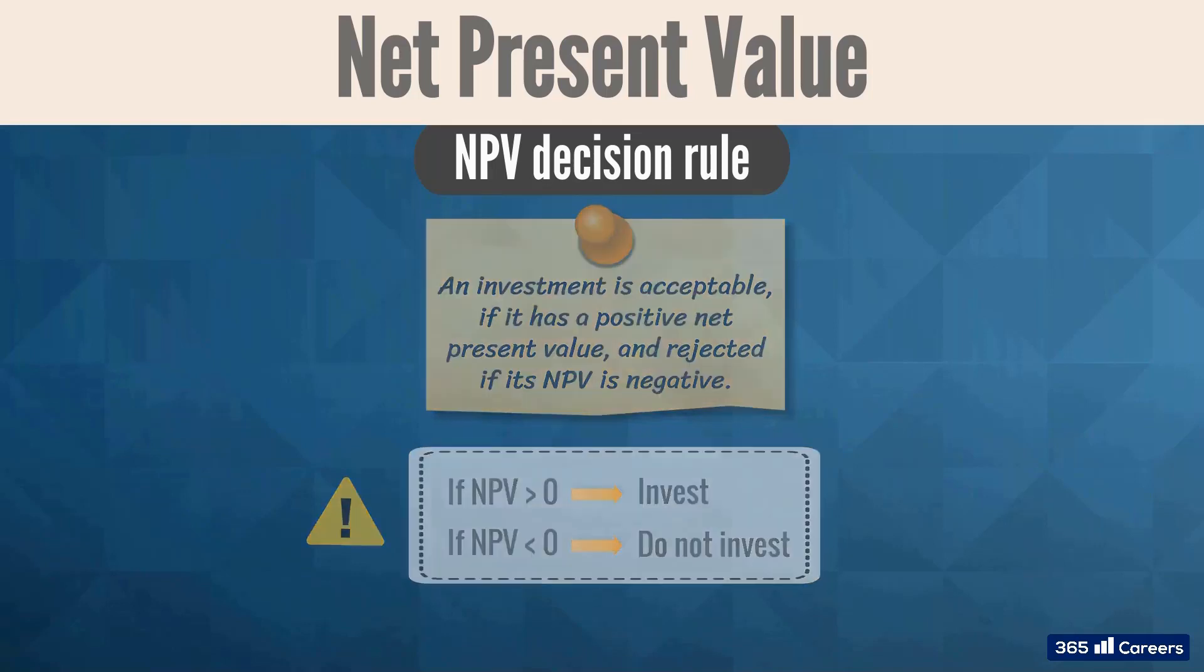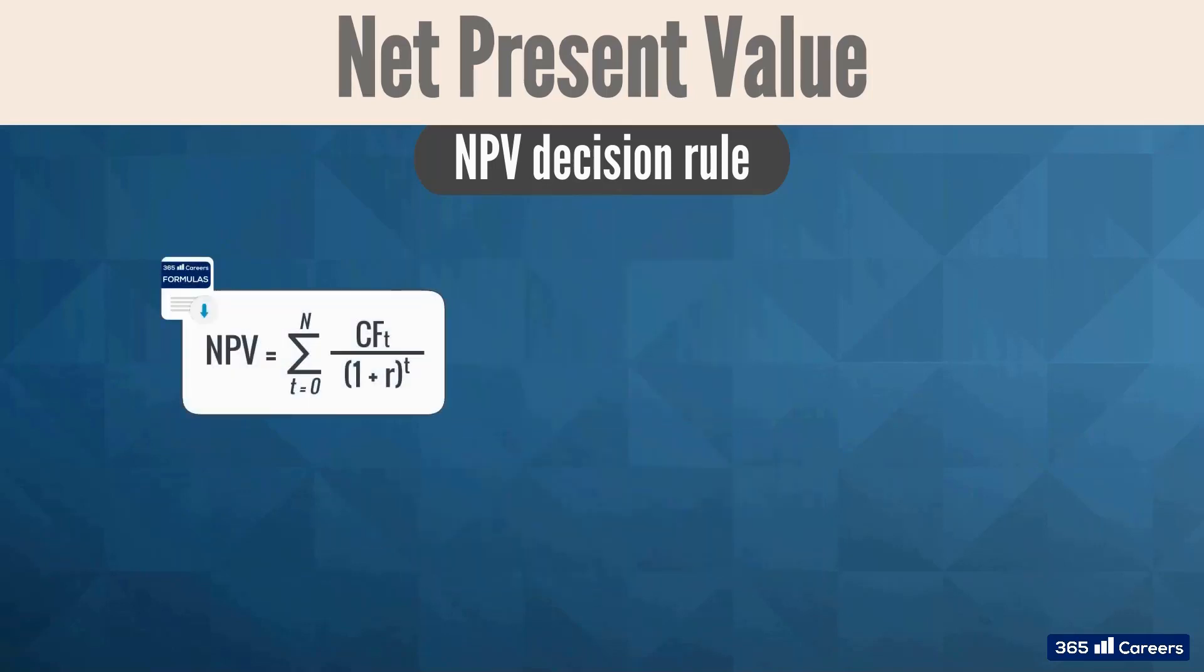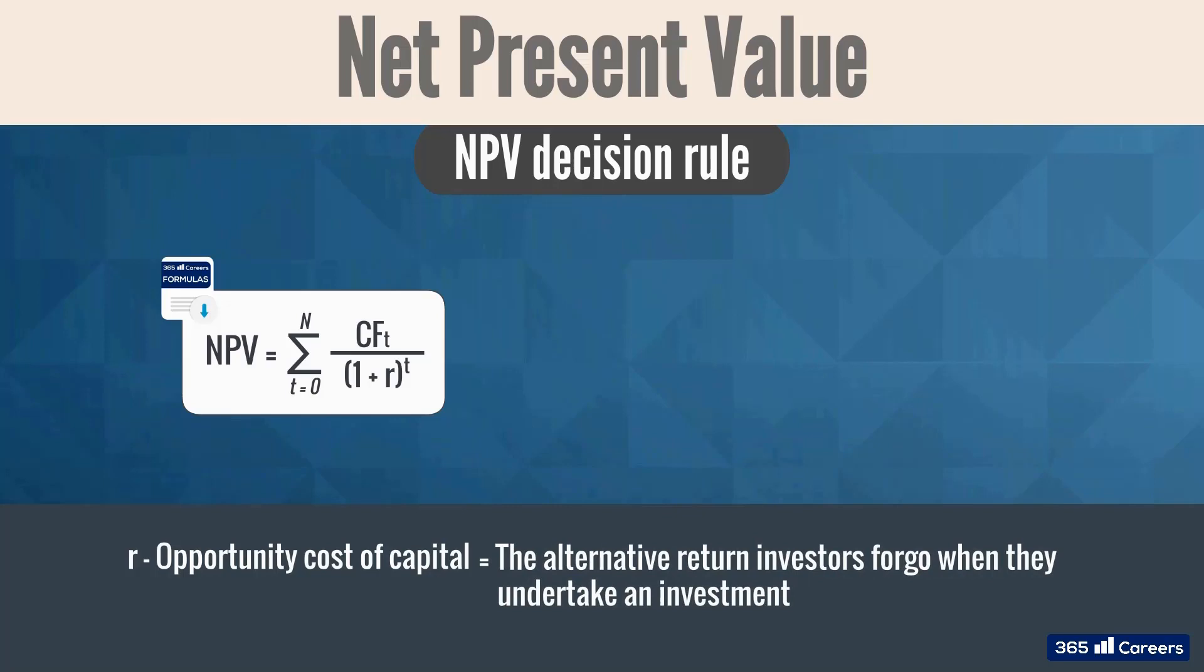What is the rationale behind this rule? When we calculate the NPV of a project, we use the opportunity cost of capital as the discount rate. The opportunity cost is the alternative return investors forgo when they undertake an investment. When NPV is positive, the investment adds value because it compensates for more than the opportunity cost of capital. That's why a company undertaking a positive NPV project creates value.